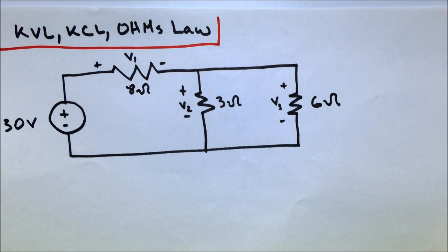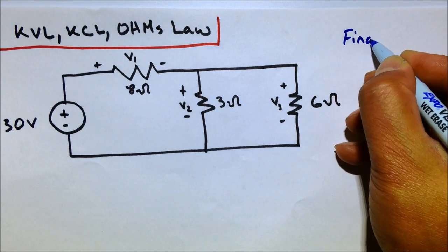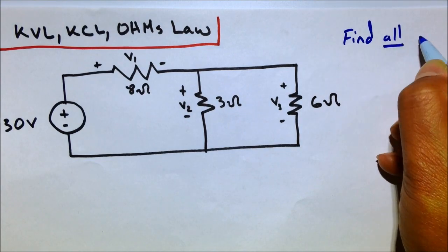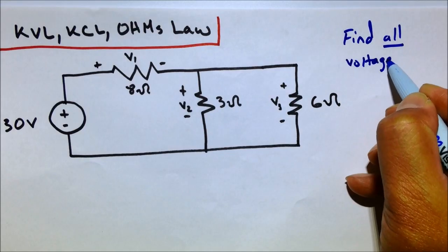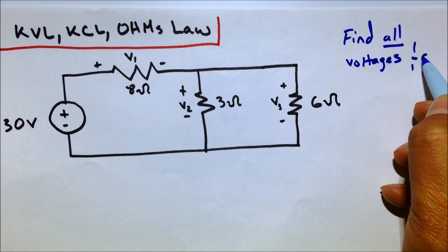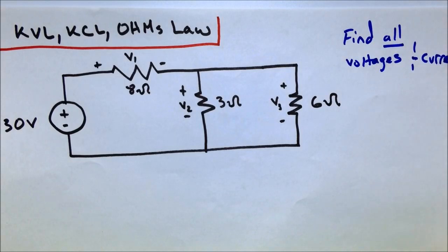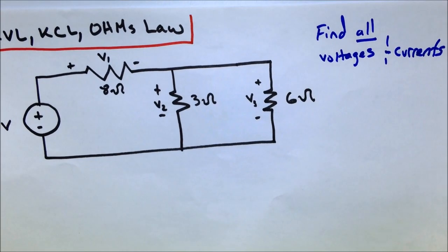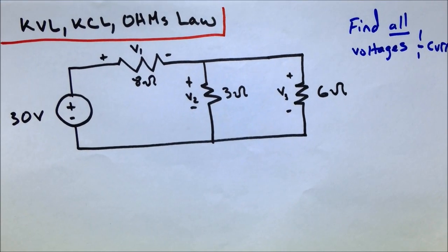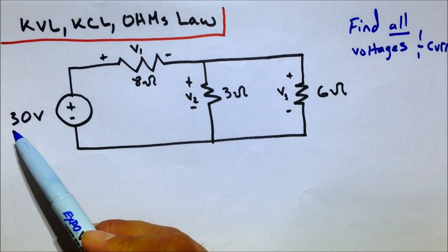And the question I'd like you to try to solve is the following: Find all, I repeat, all voltages and currents in the circuit. So we have four different elements, and I give you that guy, 30 volts. That's a power supply.